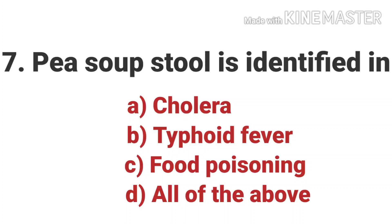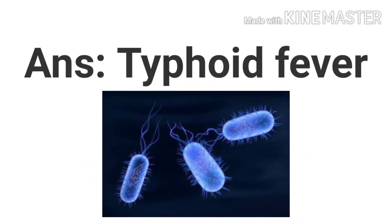The seventh question is: pea soup stool is identified in which condition? Options are Cholera, Typhoid Fever, Food Poisoning, and all of the above. The answer is Typhoid Fever. Typhoid fever is commonly associated with diarrhea and inflamed Peyer's patches, which cause obstruction in the intestinal lumen, causing constipation. Foul, green, yellow liquid diarrhea may be seen in the third week of the disease and is called pea soup diarrhea.